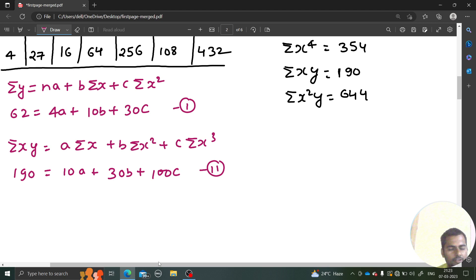Then we have third: summation x square y equals to a times summation x square plus b times summation x cube plus c times summation x power 4. Summation x square y is 644 equals to 30a plus 100b plus 354c. This is your equation number 3.